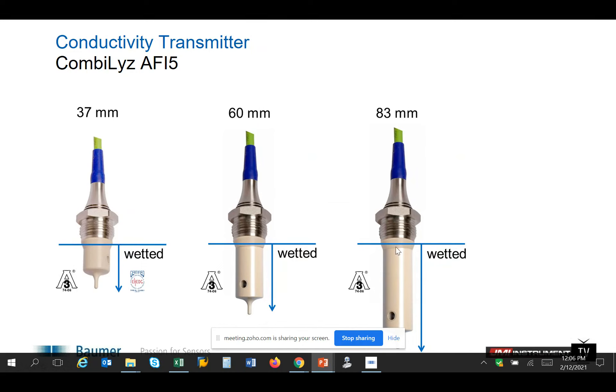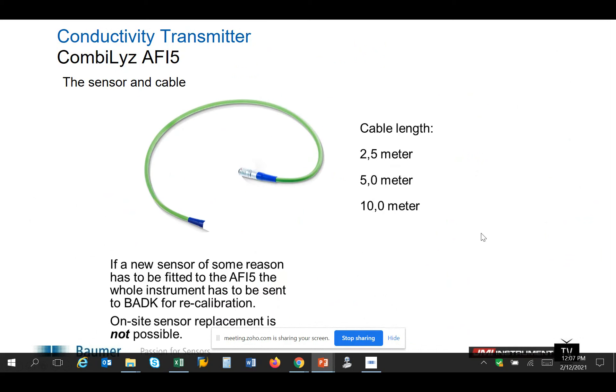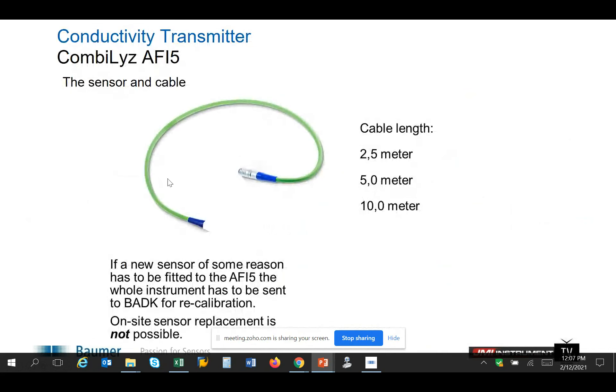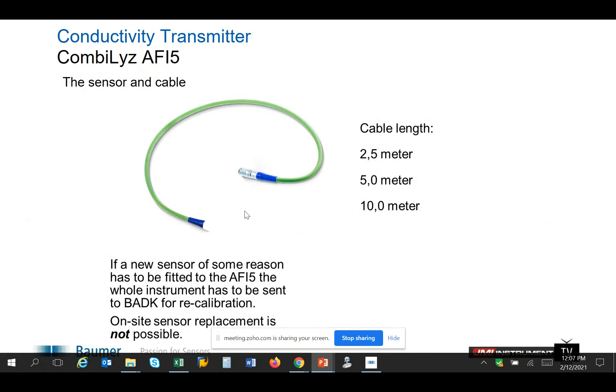Same thing for the remote mount with different versions. If you do need a remote mount, we have 2.5, 5, and 10 meter cables. These are pre-made at the factory. It's a matched pair, so they are calibrated together. So it's not something we're going to be repairing on site. It will have to go back if anything were to happen.